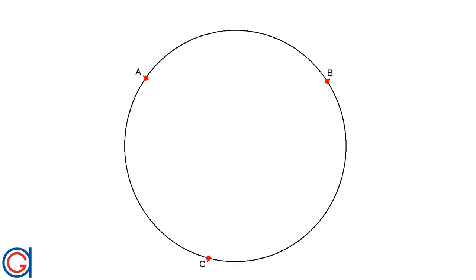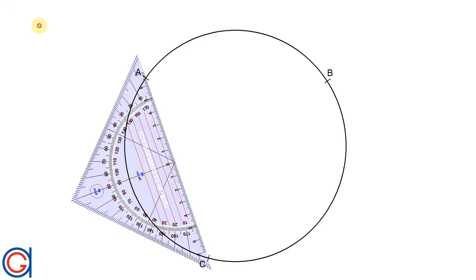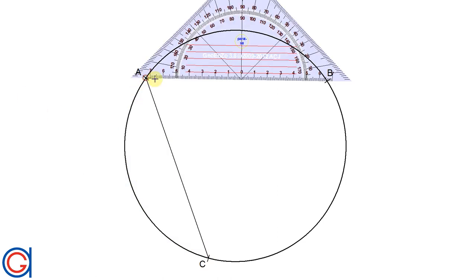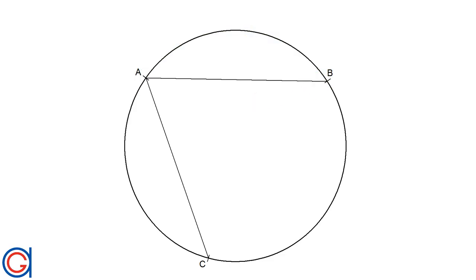So the first step is we are going to pick three random points around the circle as can be seen here: A, B and C. And the next step is we are going to join these points from A to C to form a chord and another line from A to B to form a second chord.